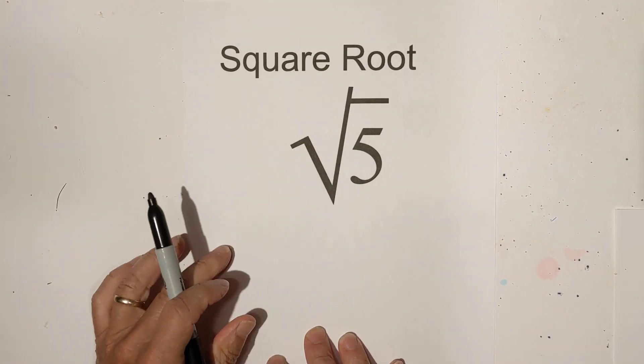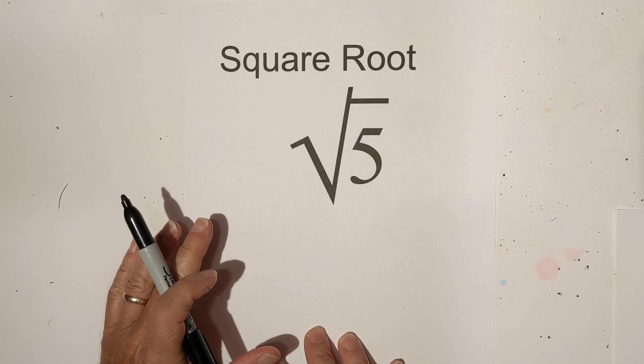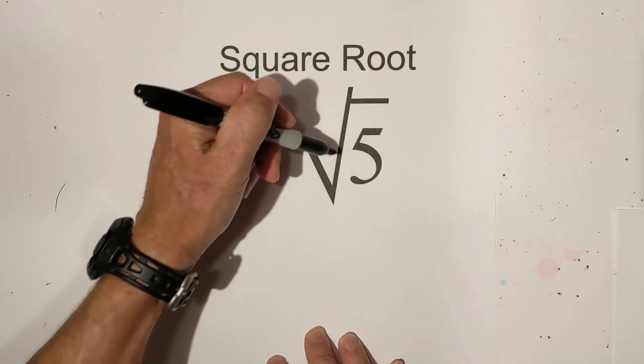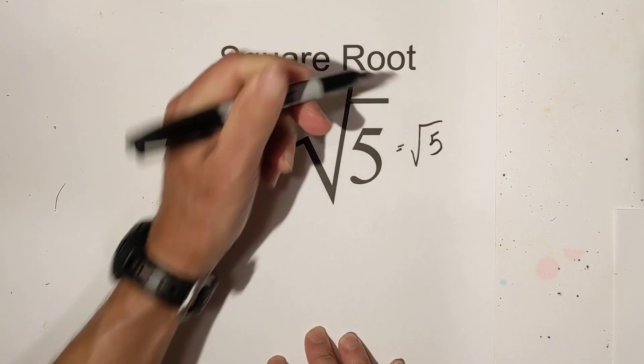First, 5 is a prime number. That means no other number divides into it evenly, so it is simplified. So in the simplified version, the square root of 5 equals the square root of 5.